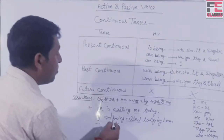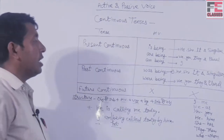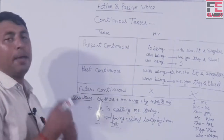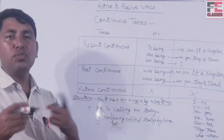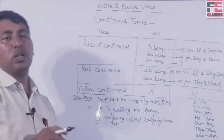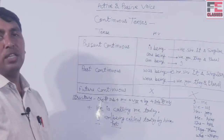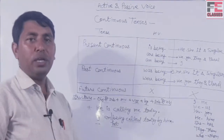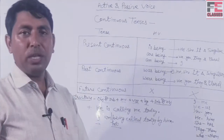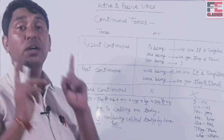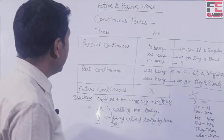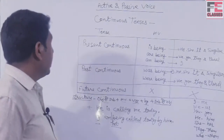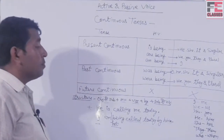यदि negative sentence बनाना हो, तो is/am/are या was/were के बाद 'not' का use करते हैं। जैसे: is not being, am not being, are not being, was not being, या were not being।